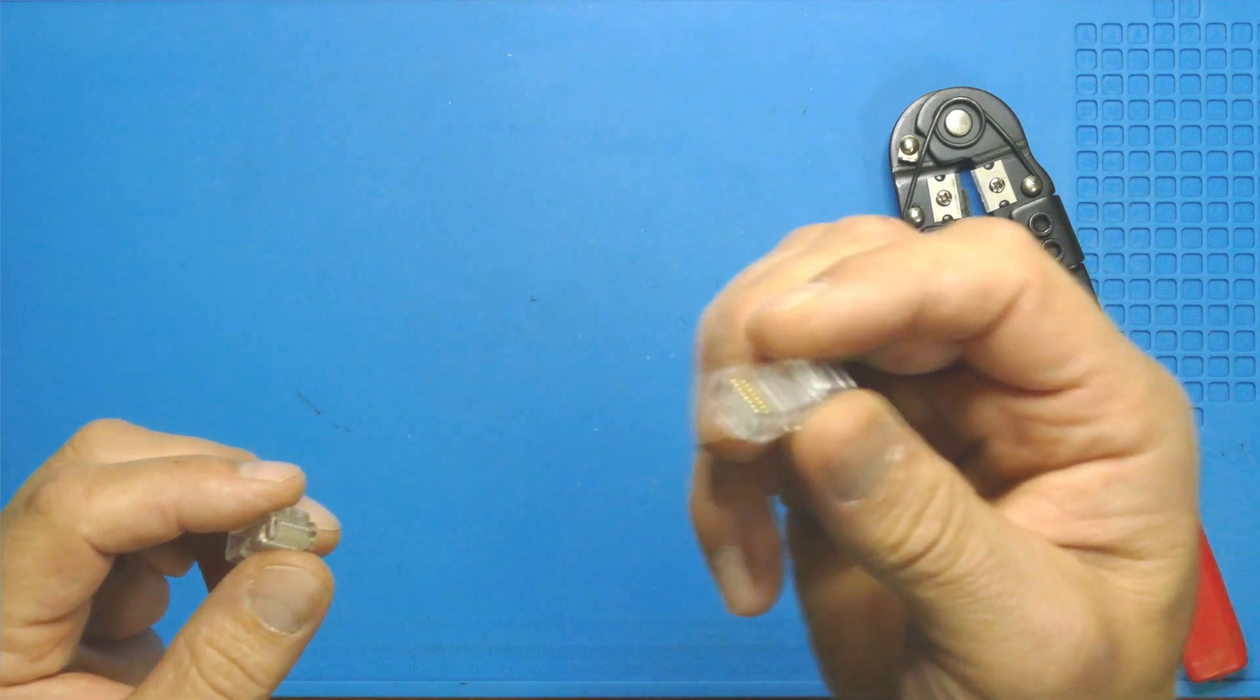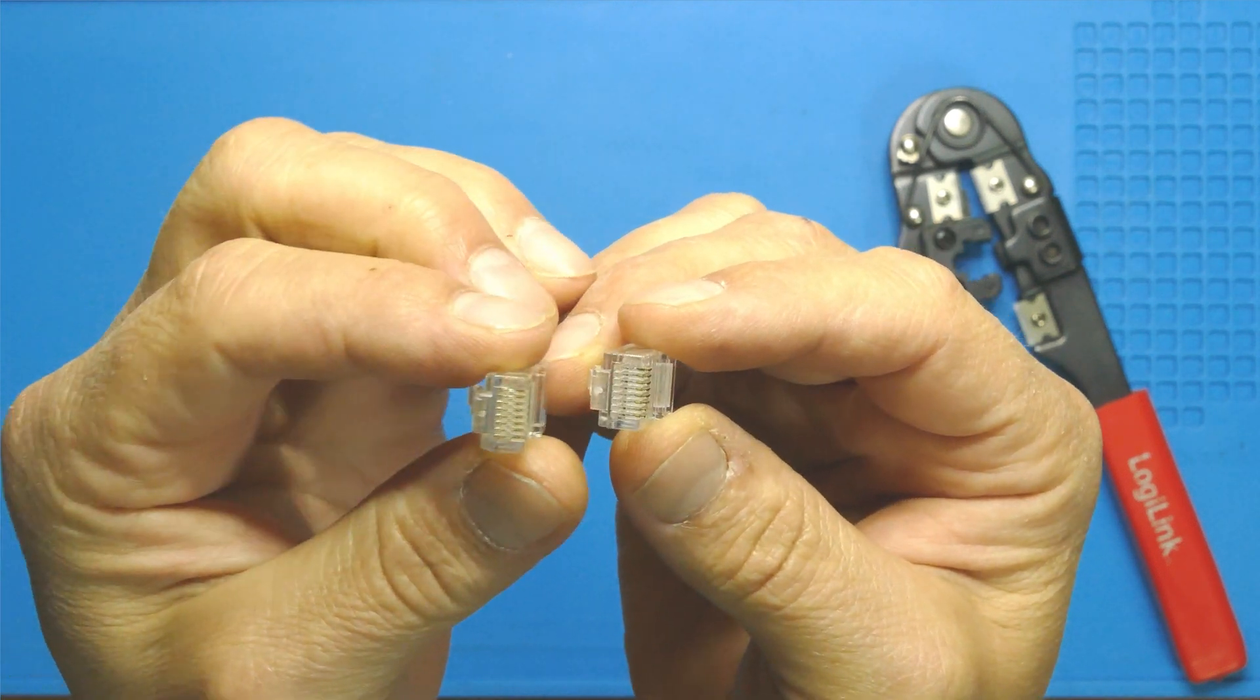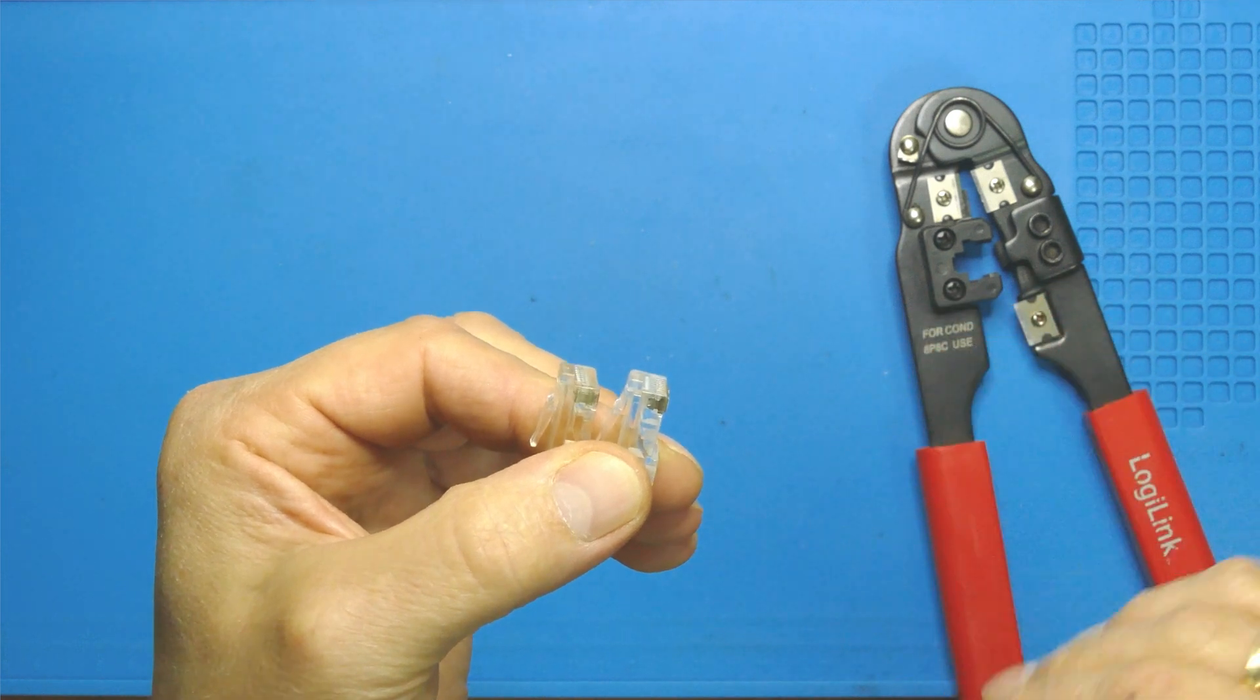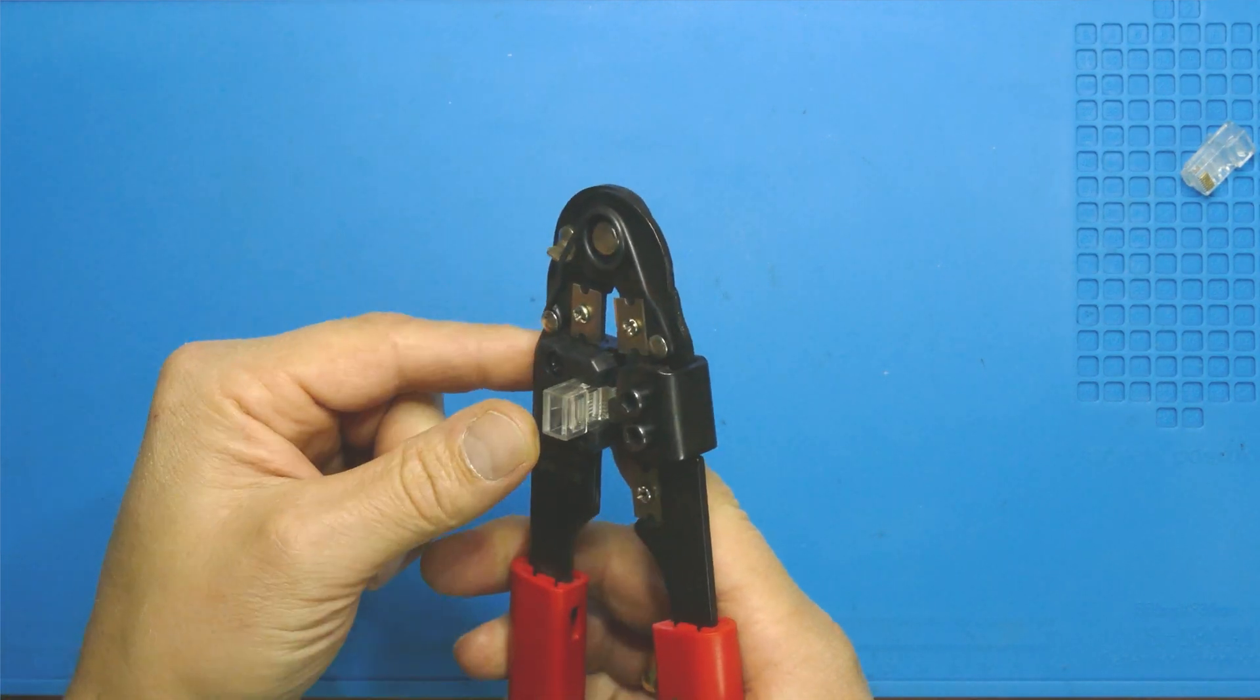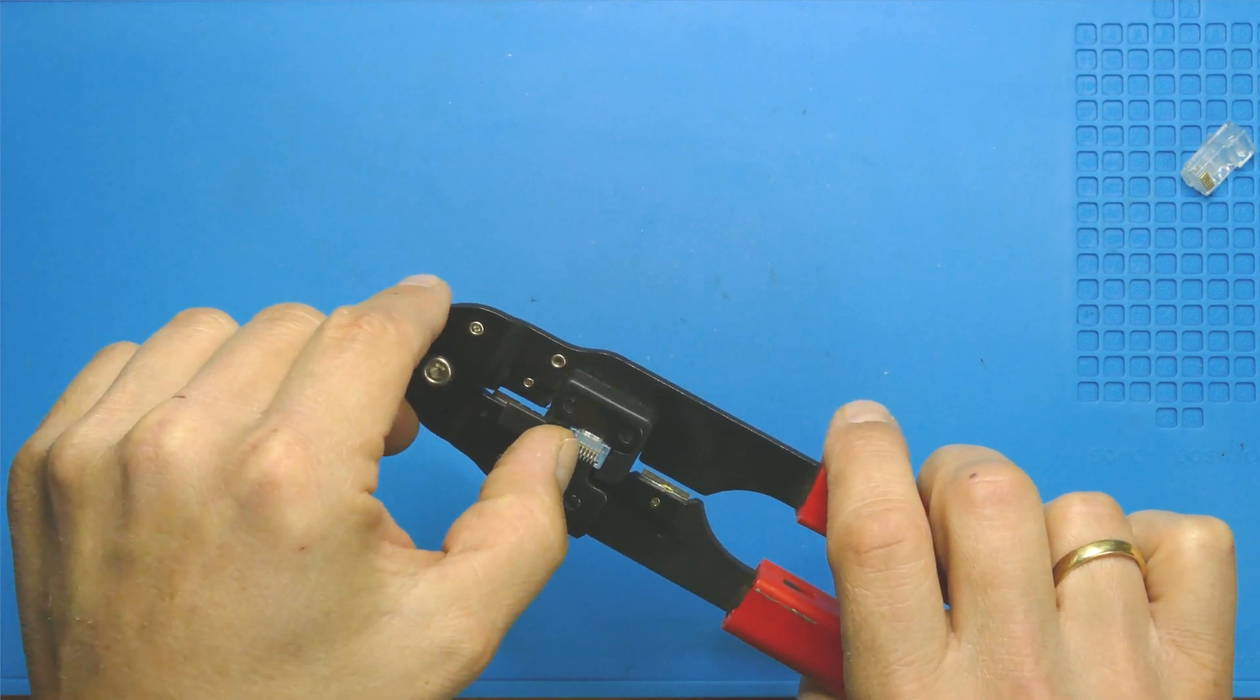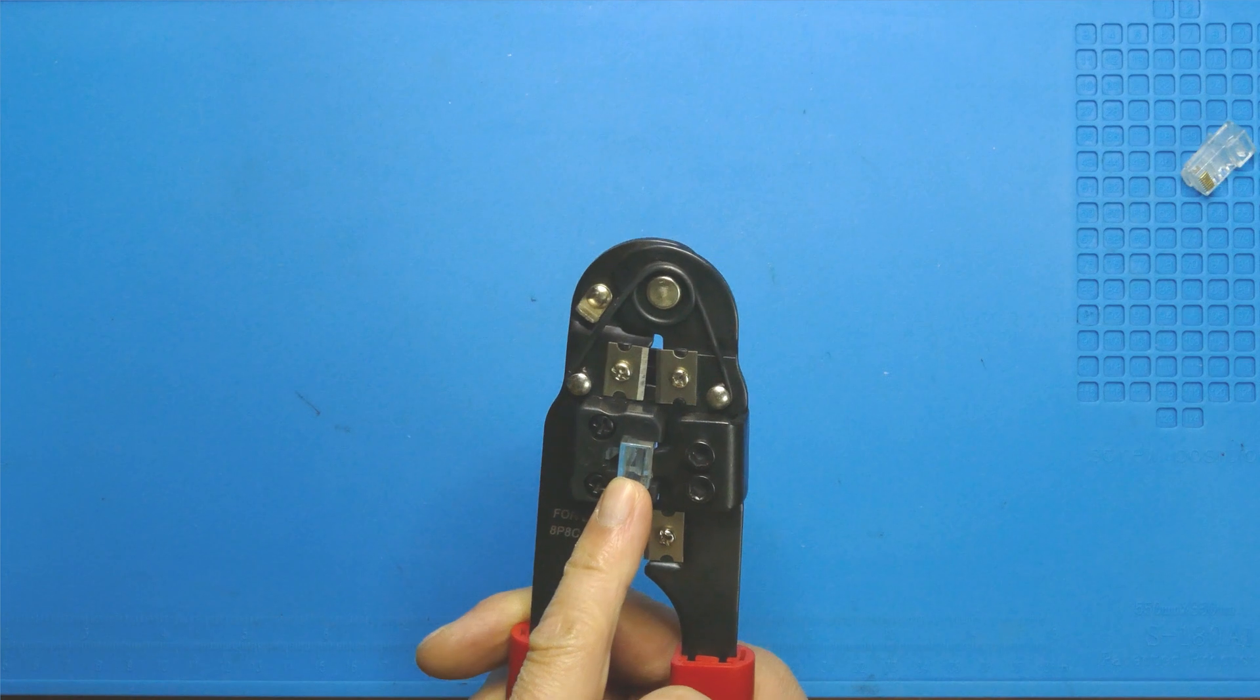And then there are those little metal contacts here that will actually make the contact with the wall connector or with the connector of our router or switch rather. This one has not yet been crimped, and I hope you can see on the camera that the metal part actually stands out of the plastic here. Once it's crimped, that metal will be pushed into the plastic connector. There are little knives here inside that will actually be pushed into the cable, and this is where the electric contact happens.